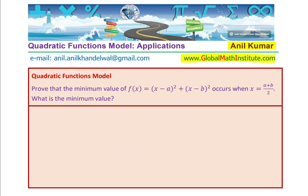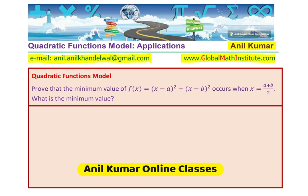You can always pause the video and answer the question. In case you want to learn from me, you can also send an email at the address given. Now let us go for the solution of this particular problem. When we want the axis, let us expand, simplify, and write it in a standard form of the equation. Then we know the axis is at minus b by 2a.